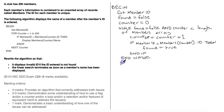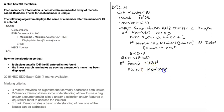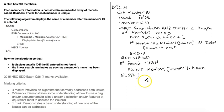After the while loop: if found is true, then print members[counter].name — noting that counter still holds the correct index since it incremented at the start of the loop when the match was found. Else, if found is still false after going through the whole loop, print 'invalid ID' as no member with that ID was found. That's the end of the if statement and the end of the algorithm.